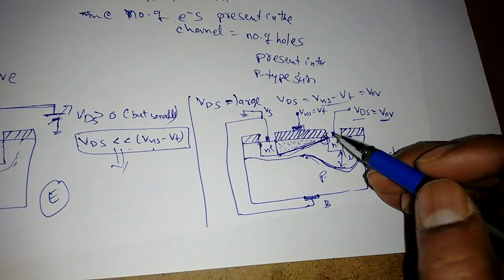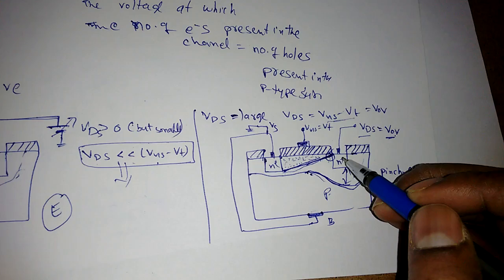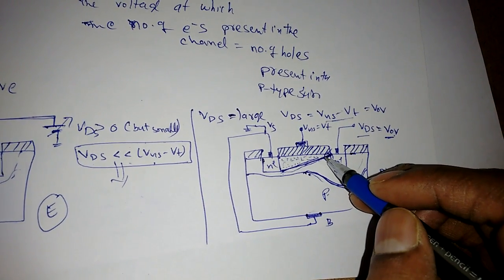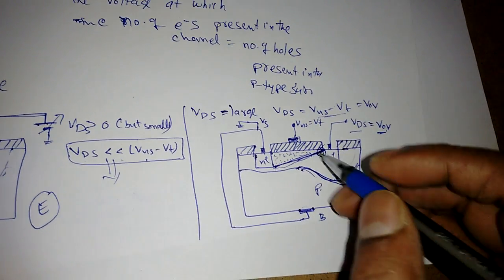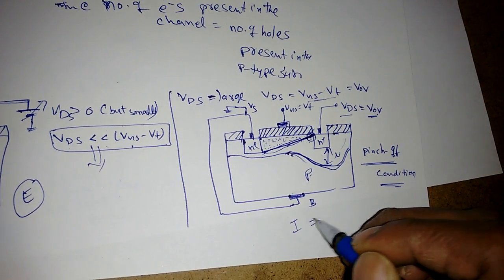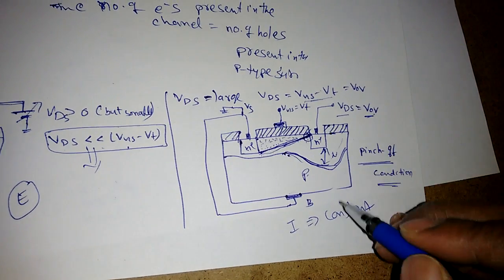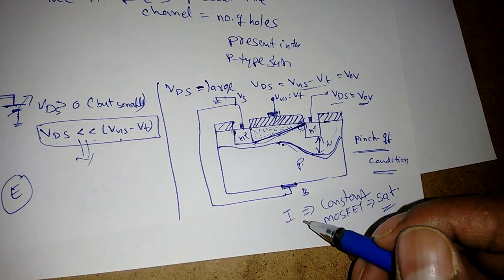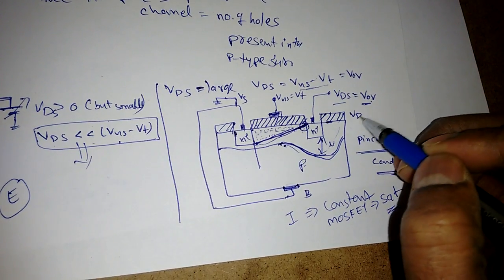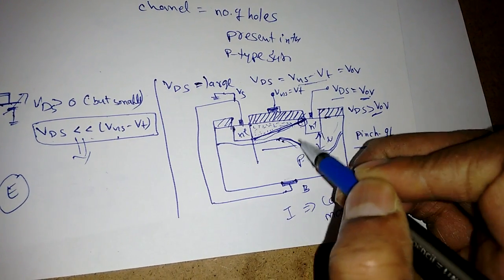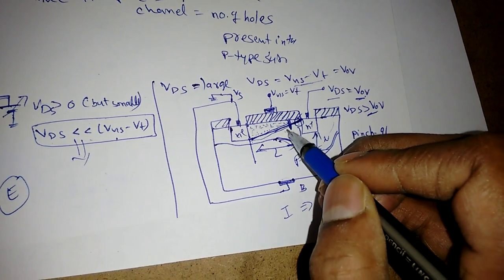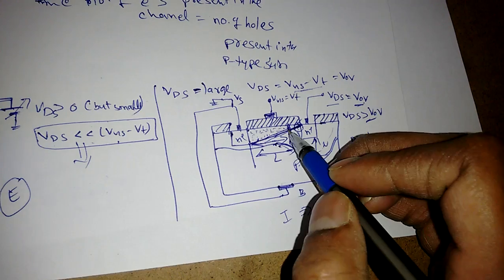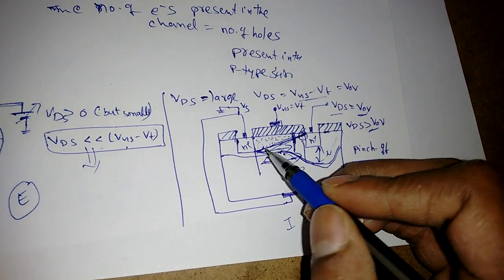Once the channel is pinched off, the current remains constant. Before pinch-off, increasing VDS caused electrons to move faster from source to drain. After pinch-off, although the electric field is high and electrons still move fast, the number of electrons coming from source to drain is constant, and they traverse the channel in a fixed time. That is why the current is constant at this voltage — this is why we say the MOSFET is in the saturation region. If we apply even more voltage where VDS is greater than VOV or VGS minus VT, the effective channel length L decreases, which is called the channel length modulation effect.